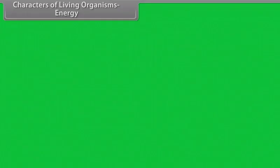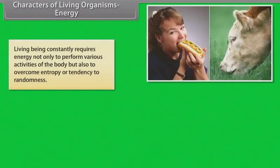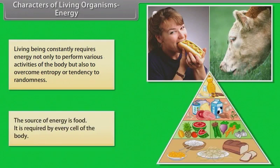Living beings constantly require energy — not only to perform various activities of the body, but also to overcome entropy, or the tendency of randomness. The source of energy is food, and it is required by every cell of the body.